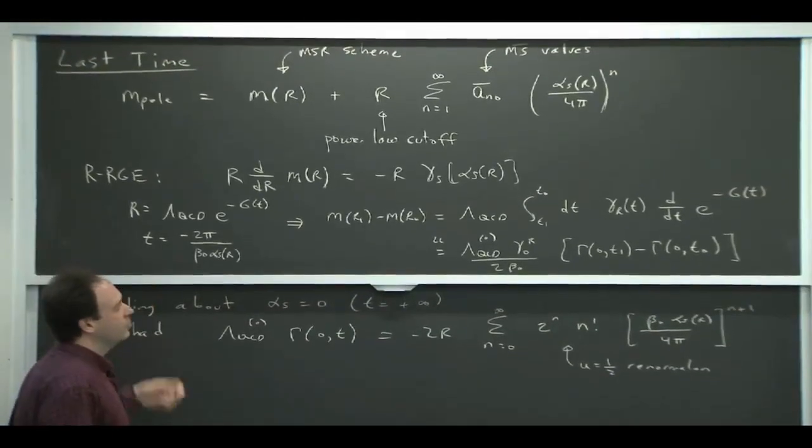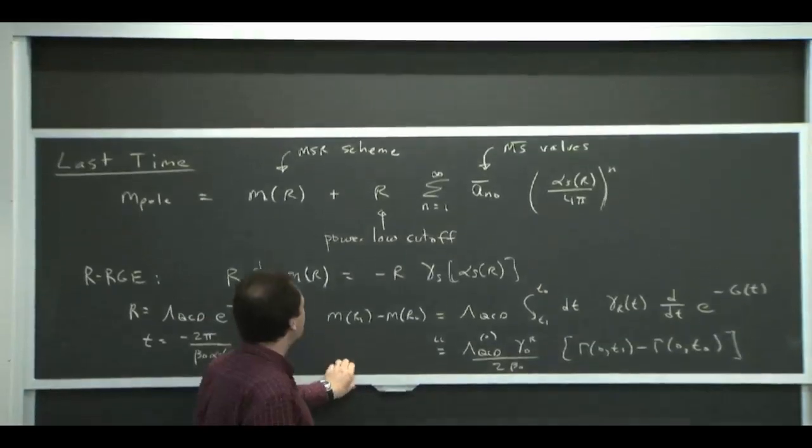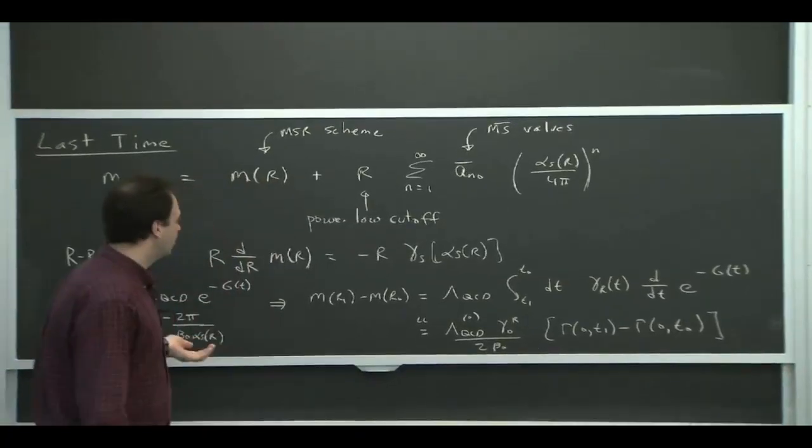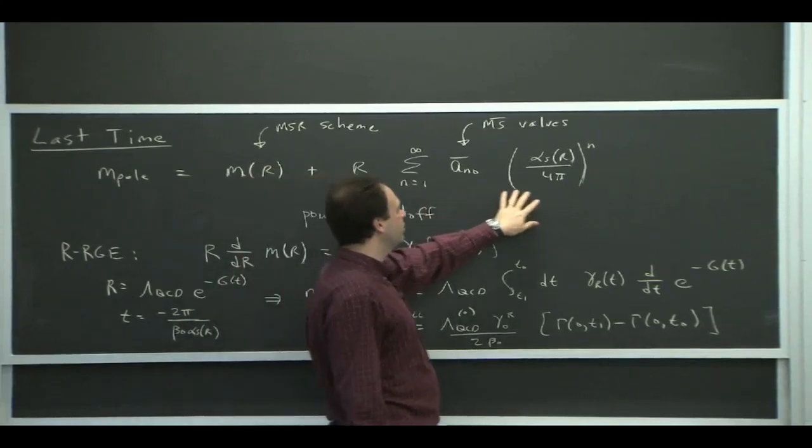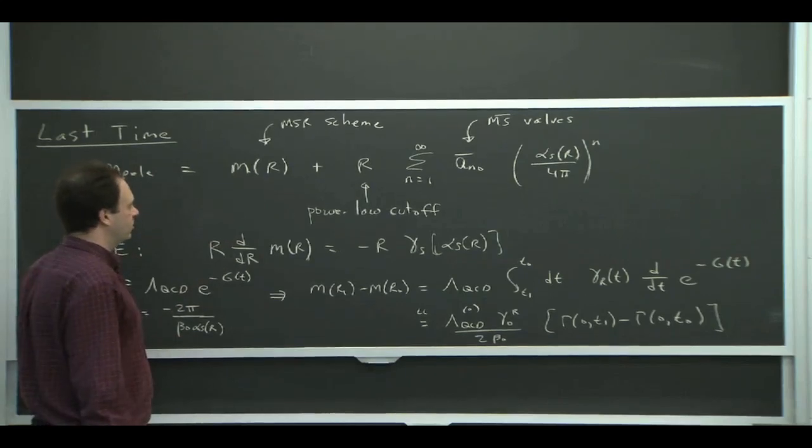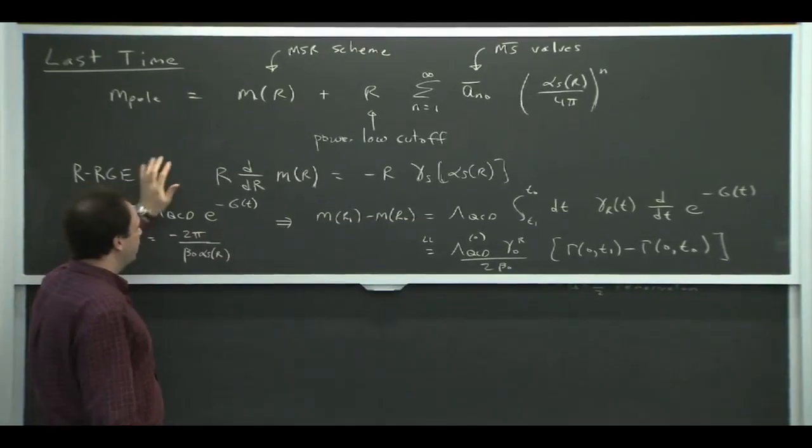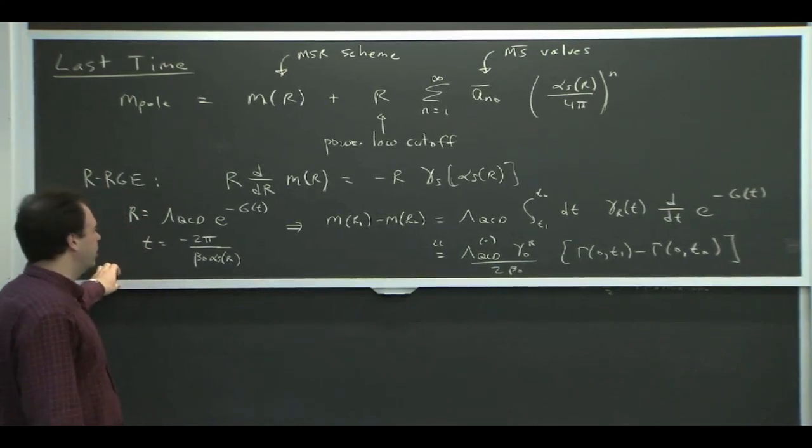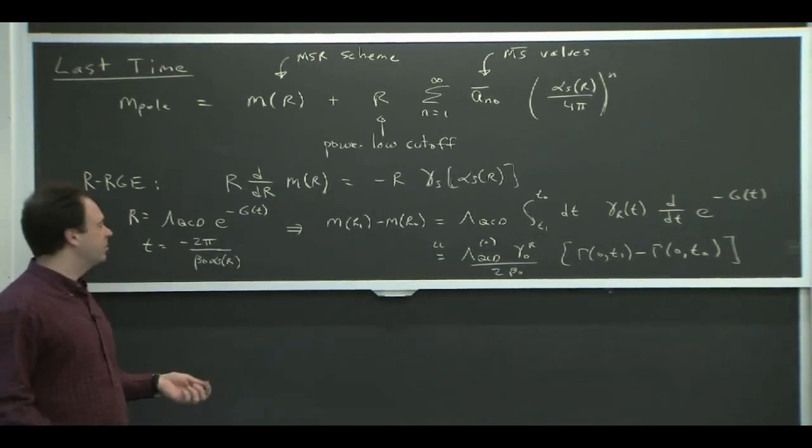In particular, we don't really want to calculate anything new if we can avoid it, and that's what this scheme does. It uses the fact that we know the conversion of the pole to MSBAR scheme has this renormalon. So this series here has a renormalon, and it just takes that series over from MSBAR, puts it in with a cutoff, which is this R, and defines a new mass scheme using that formula.